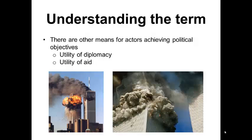Similarly, we could use the term utility of aid to explore how some states and actors provide or receive aid in order to help them maintain or increase their political power within the global arena. From these examples, it becomes apparent there are different ways in which global actors can achieve their goals, but the utility of violence is commonly used to discuss conflict and terrorism and one type of action that can be useful for states and global actors in terms of these two ideas.